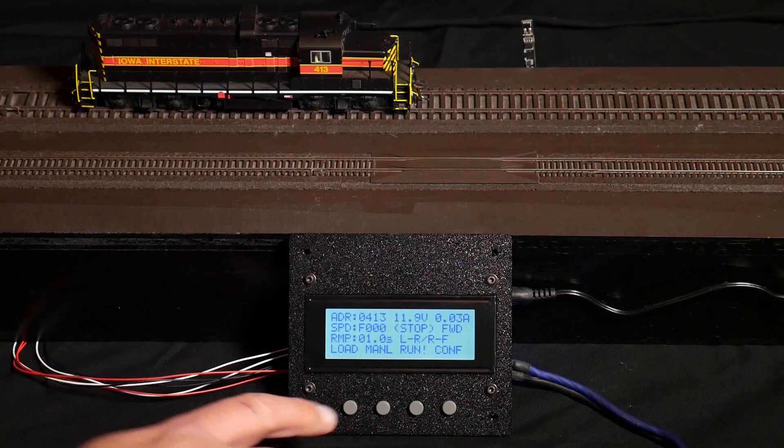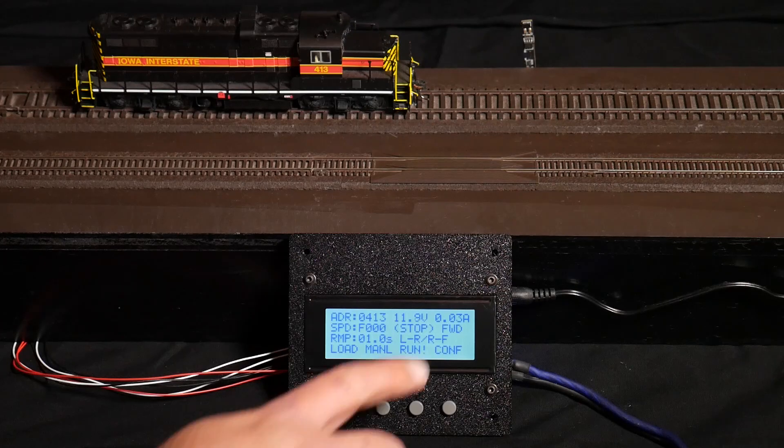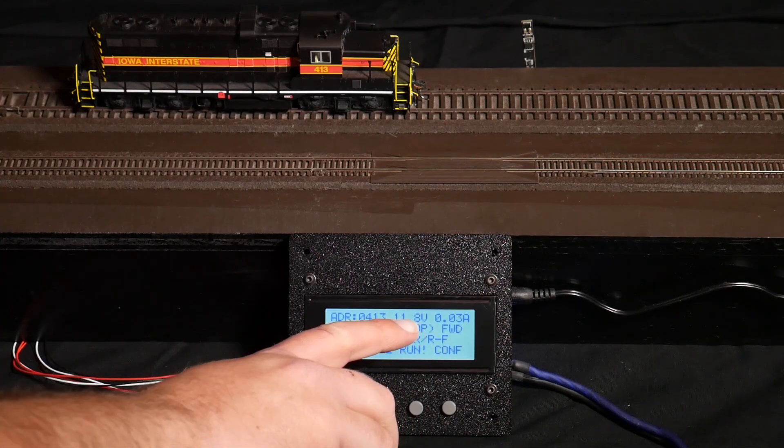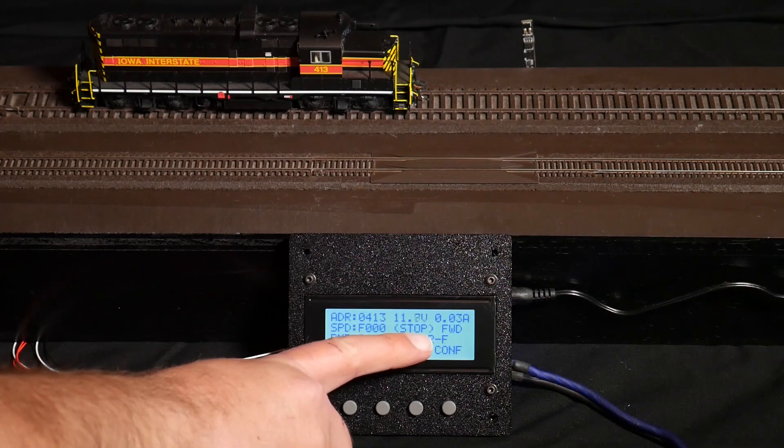So as you see right now, I'm set up for locomotive 413, which is my Iowa Interstate Jeep here. I've got my output track voltage and current. My speed is currently zero because I'm stopped.